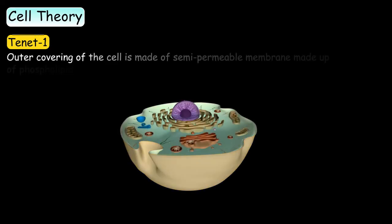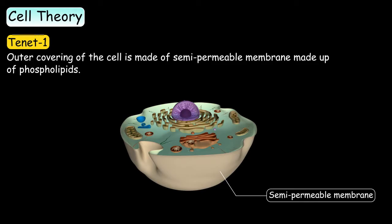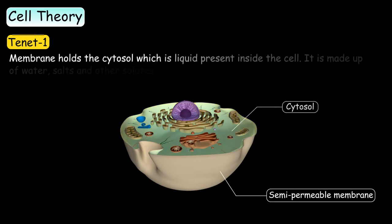The covering of cells is made up of a semi-permeable membrane which is made up of phospholipids. This membrane holds the cytosol which is a liquid present inside the cell.